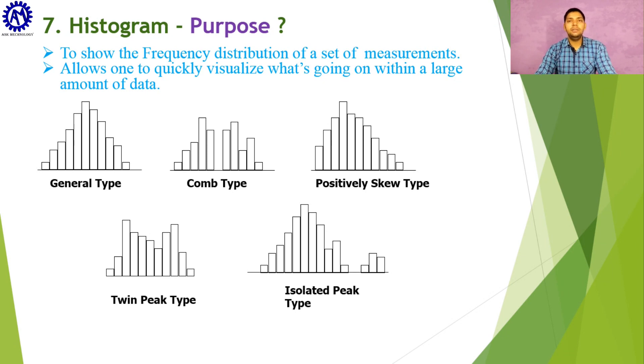For example, you can see many histograms here. A general type of histogram is made with normal distribution. A comb type is also there. After that, positive skew type is there. At the bottom, isolated peak type is there because there is a gap where both peaks are separated. A twin peak type is also there, like two buildings standing opposite to each other.